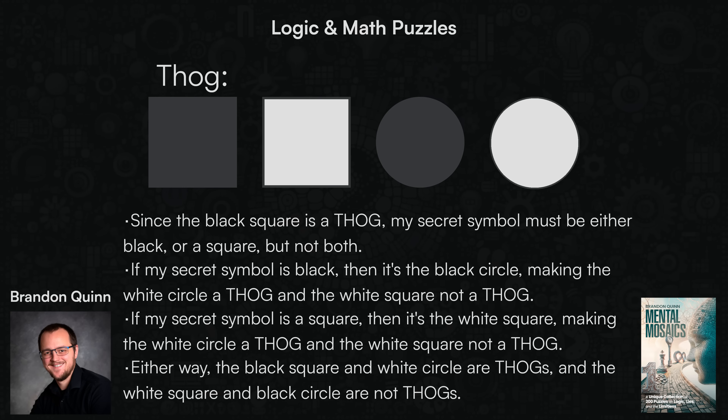This is an interesting example of a type of logic puzzle where the problem statement states that there's a certain piece of information that's out there that you don't have, and at first it might seem like you need to find out what that information is before you can solve the puzzle. But as it turns out, just by evaluating the logical implications of the information you are given, you can actually arrive at the solution while never learning what that particular piece of information was. I think that this is something that some of the more difficult logic puzzles have in common.